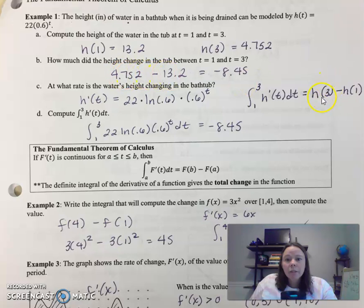Notice up here, this is h of 3 minus h of 1. That's part b. That's the right side of the formula. That's the original function. And the left side of the formula is the definite integral of its derivative, dt. And these are equivalent. We saw that. It's perfectly demonstrated right there.